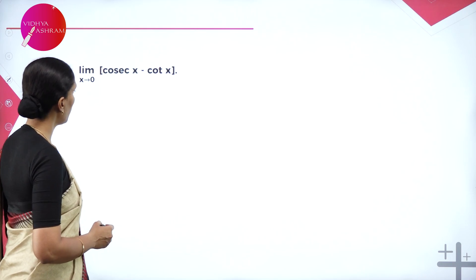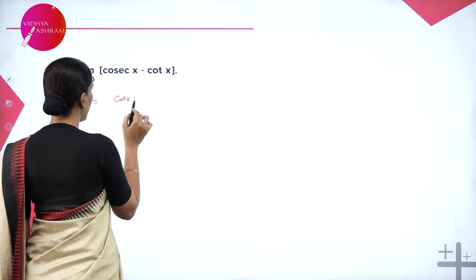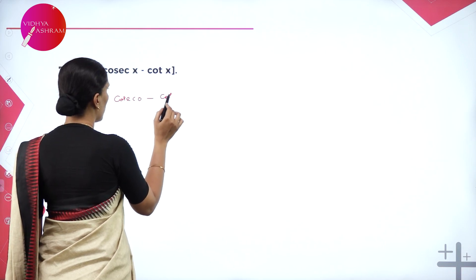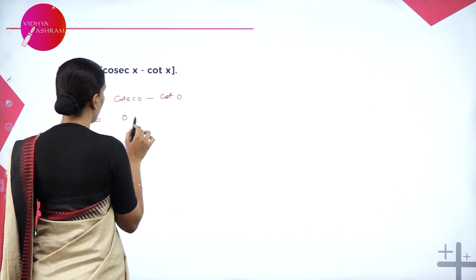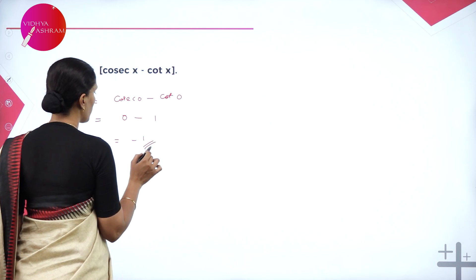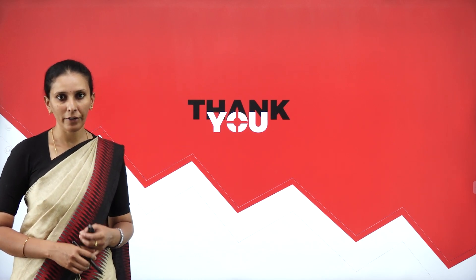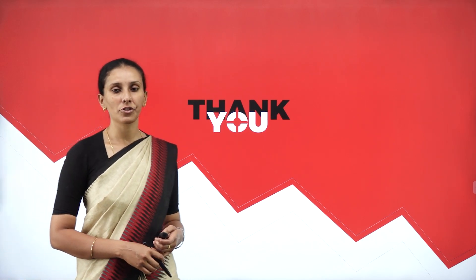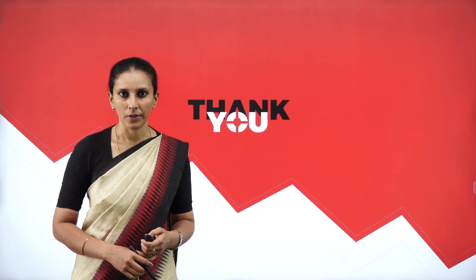For limit as X approaches 0 of cosecant X minus cot X: applying X equals 0, cosecant 0 is undefined in one form, but the direct substitution gives cosecant 0 minus cot 0. Cot 0 value is effectively computed giving minus 1. In today's session, we learned the standard limit of sin X over X and evaluated several trigonometric limit problems. I'll meet you in the next session with a new concept. Until then, keep watching, keep learning, and keep exploring. Thank you.